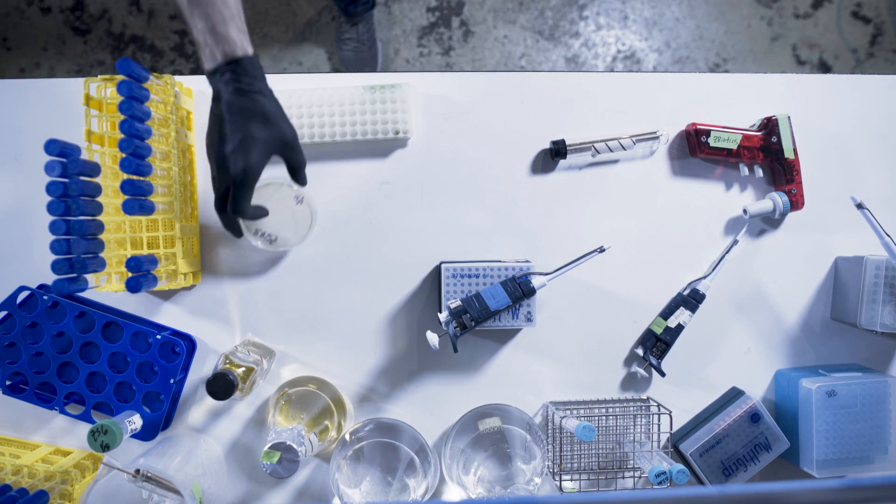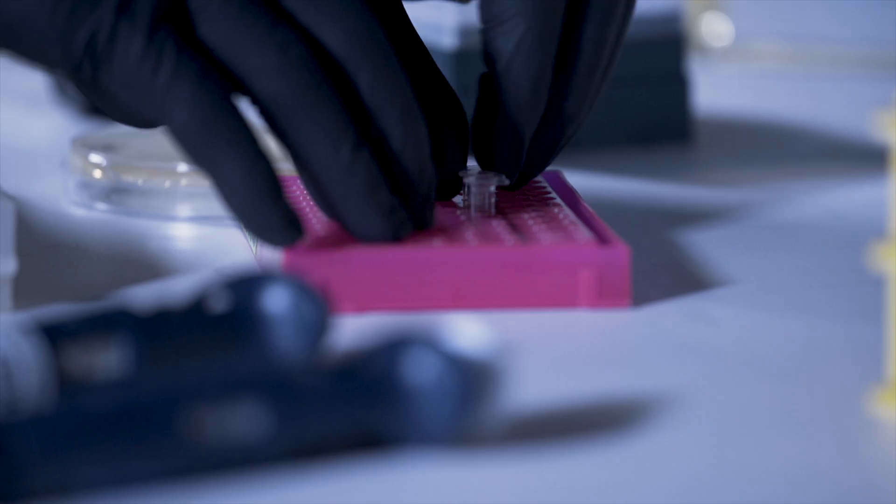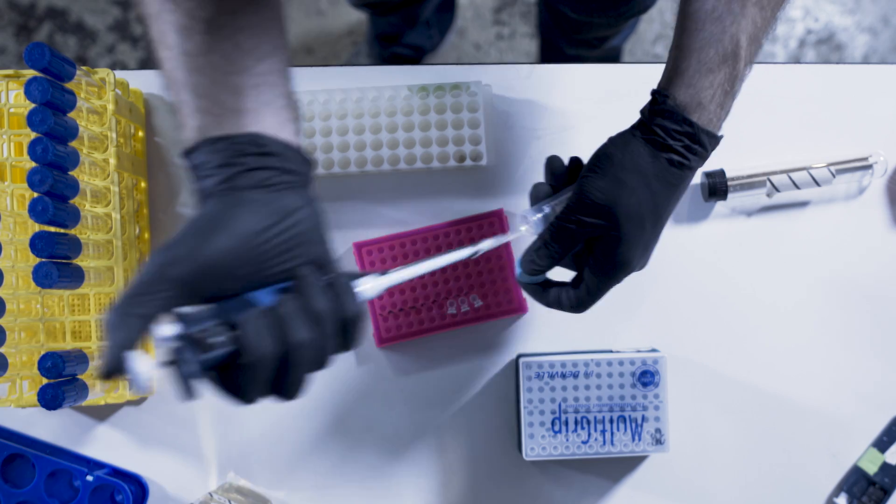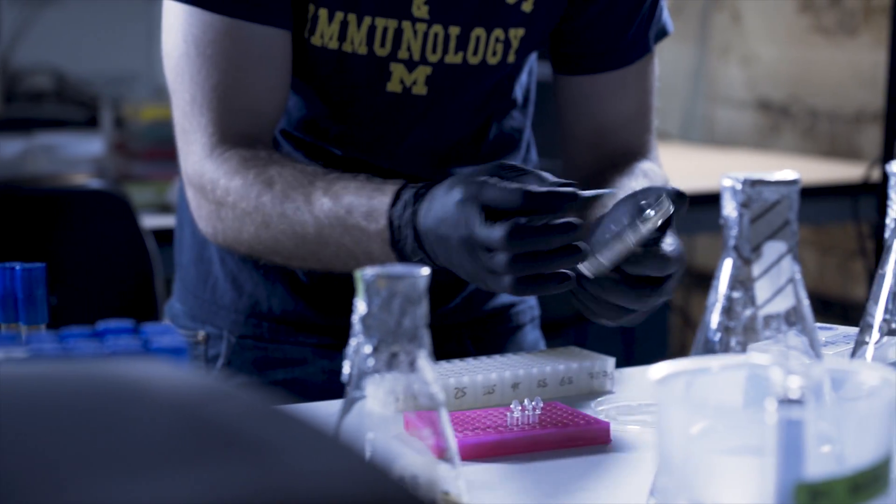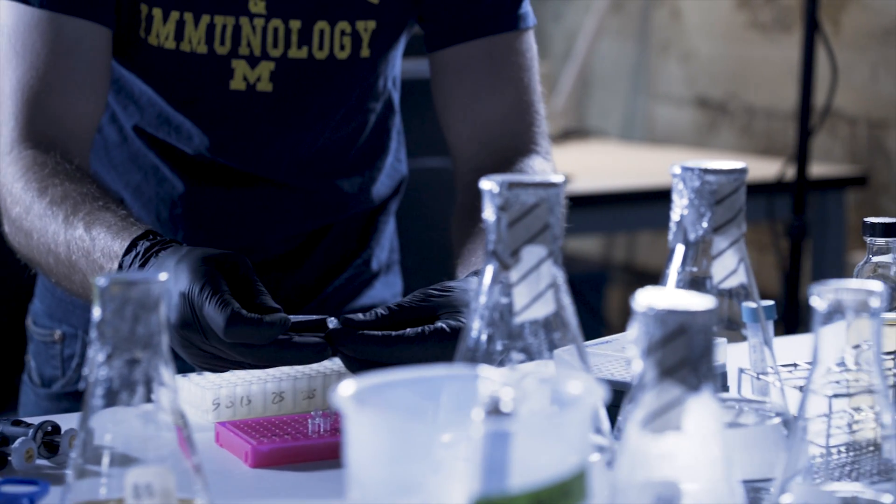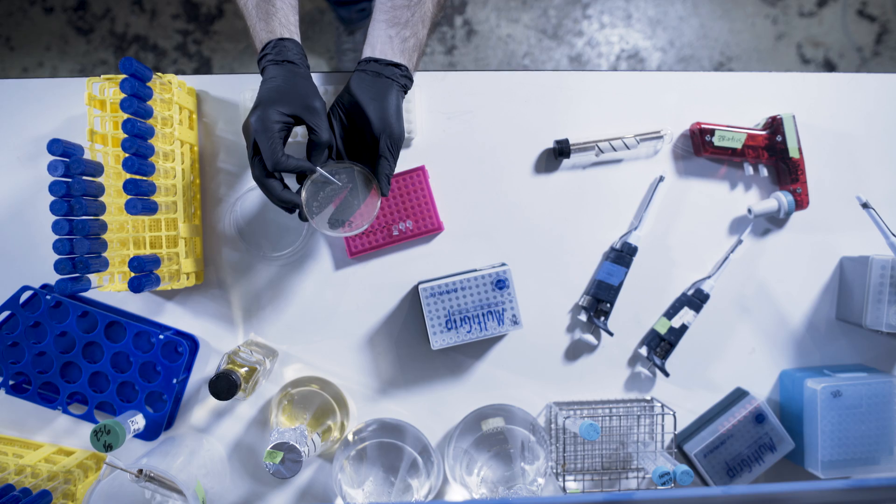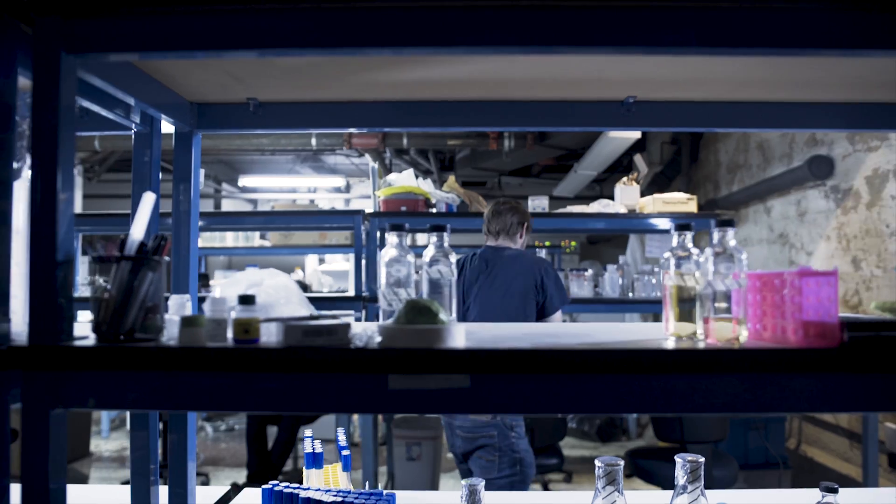However, sometimes weird stuff happens, so we always verify our clones using diagnostic PCR or by sequencing. Basically, we'll take a few colonies and sequence a short portion of their DNA where we expect the modification to take place. We can then read this sequence and verify that what we wanted to happen actually took place.